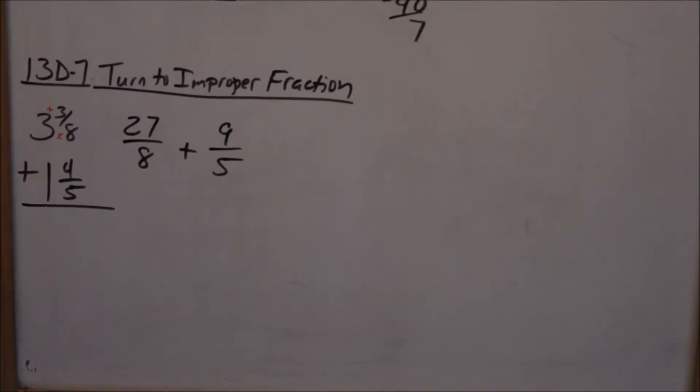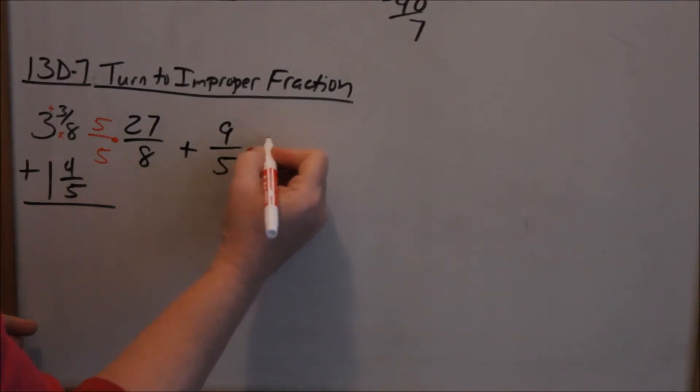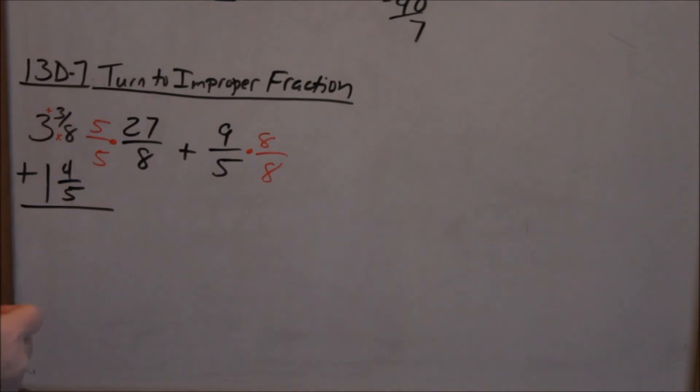So when you make a common denominator, take this number and multiply it to this fraction. I usually use a dot to show my multiplication. Take this denominator, multiply it to this one. Whenever you do the denominator, you have to do the numerator. Then you can see we're going to have a common denominator of 40.